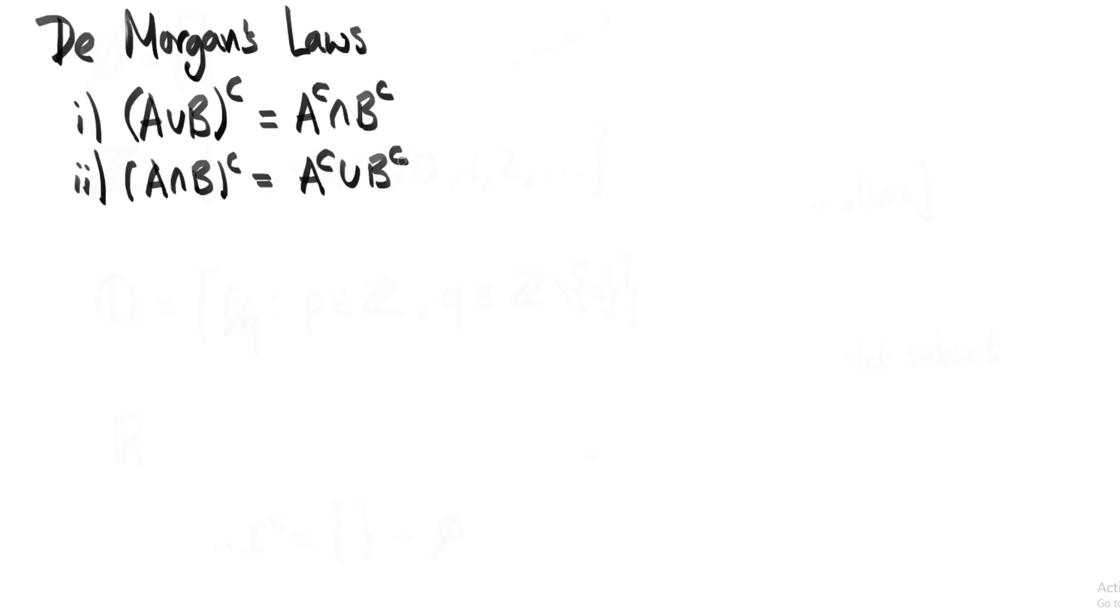When proving a theorem, it's a good idea to first try and convince yourself that it's true. A good way to do this in set theory is to use a Venn diagram. A Venn diagram will just give us a graphical representation of what's on the left and the right hand side of these equalities. Let's look at the first statement for now.